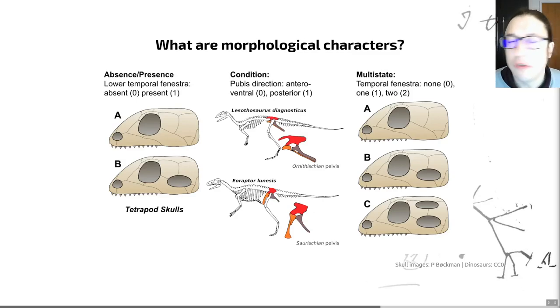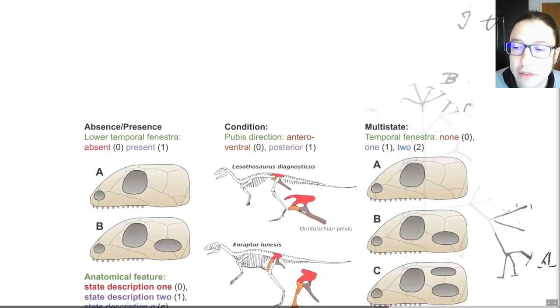So those are some examples of morphological characters. And as you can see, this is quite a kind of intellectual exercise that sometimes people suggest lacks objectivity. They may be correct, but it's the best that we have when it comes to dealing with morphological characters. And that's the only way we have of dealing with fossils. So, you know, it is what it is, I guess.